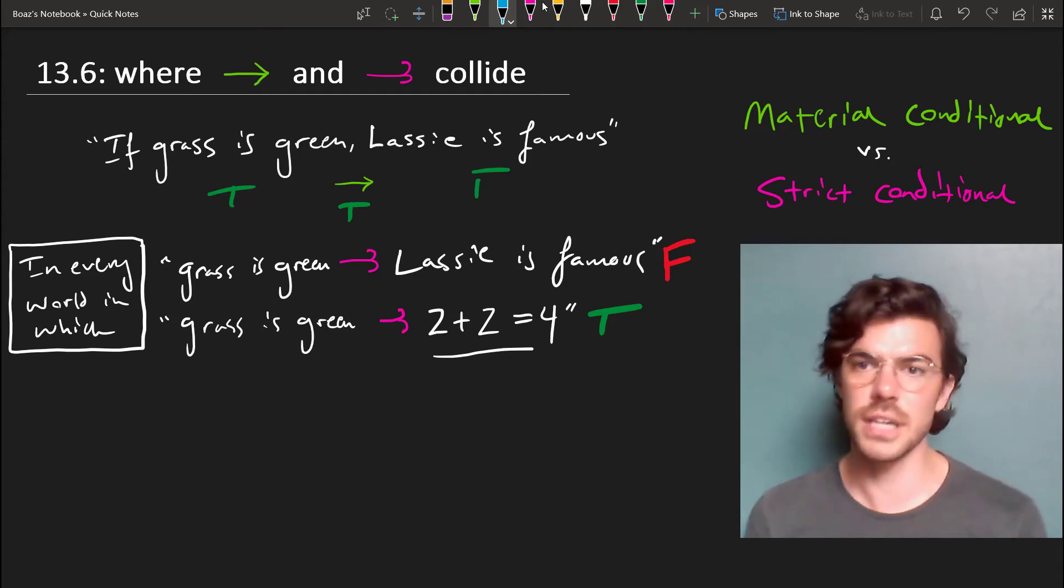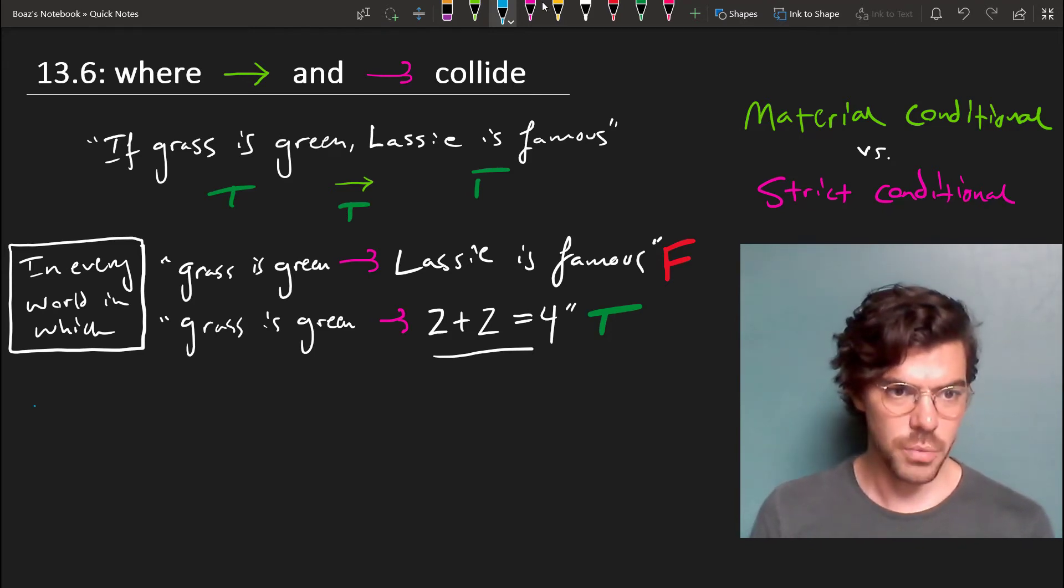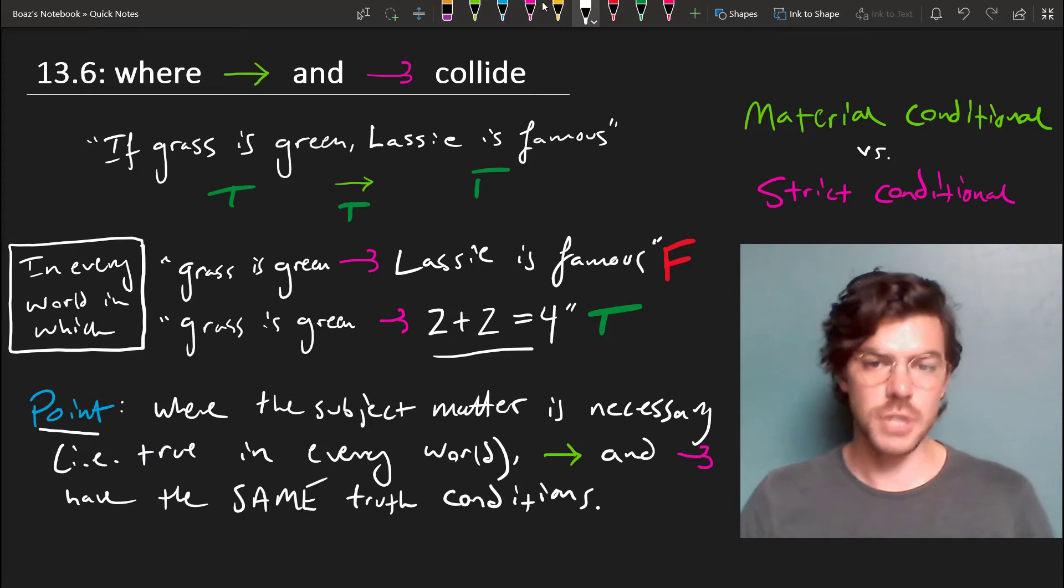But this can lead us to an interesting insight in the relationship between the material conditional and the strict conditional, and also why it is that the material conditional operates the way it does. The point just is that where the subject matter is necessary, that is to say where the subject matter is true in all possible worlds or true in every world, the material conditional and the strict conditional have the same truth conditions.